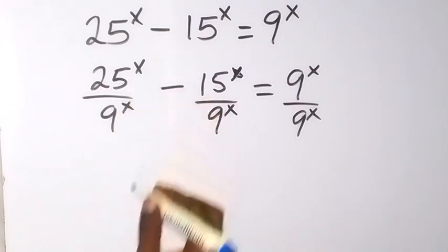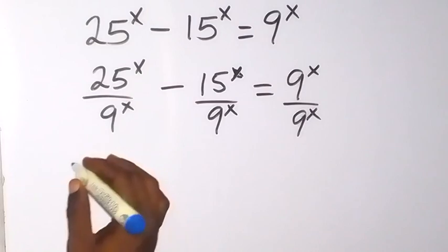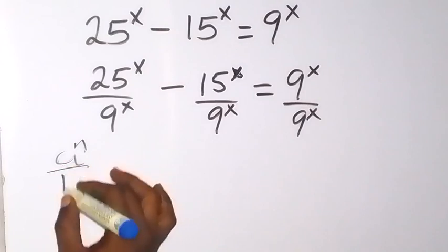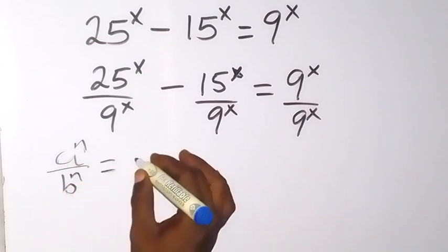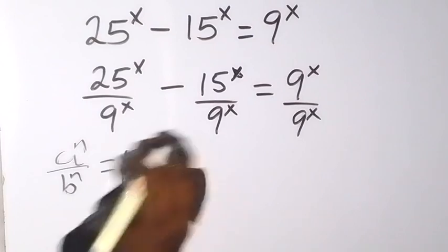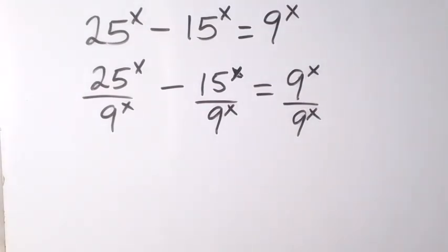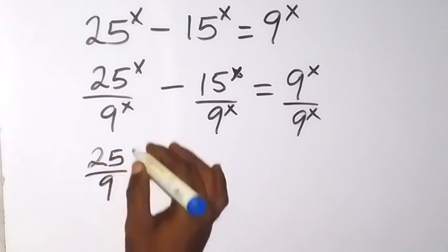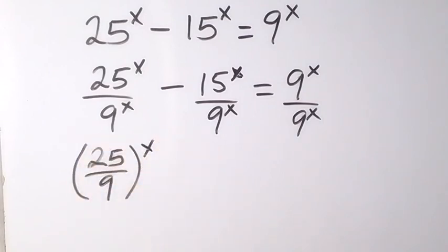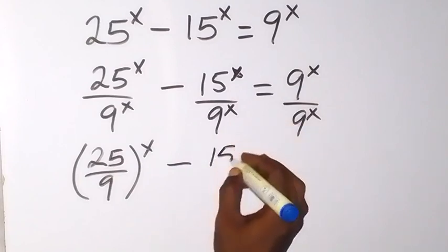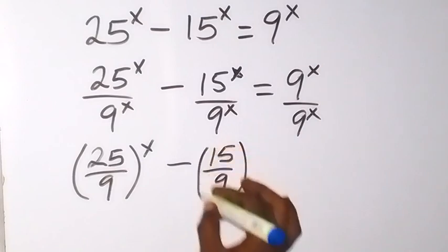On this side, we can take x out using the law of indices. That is, when we have a raised to power n divided by b raised to power n, you can write this as (a over b) everything raised to power n. So we have (25 over 9) raised to power x, and also on this side we can take x out and say this is (15 over 9) raised to power x.